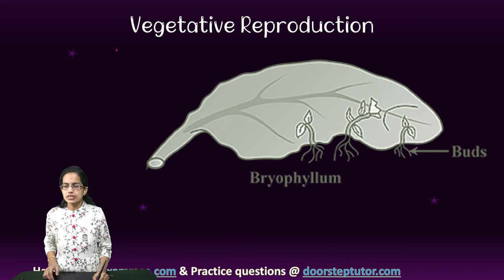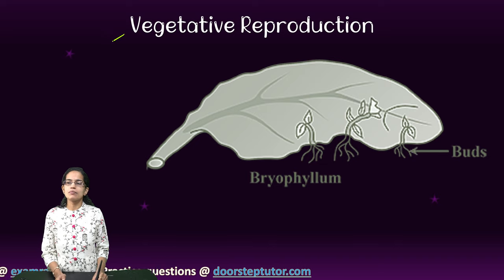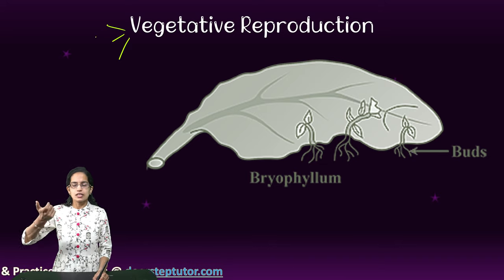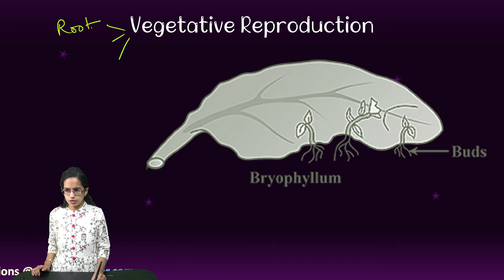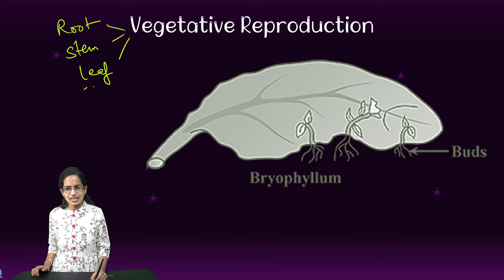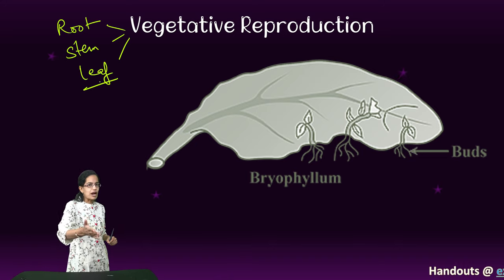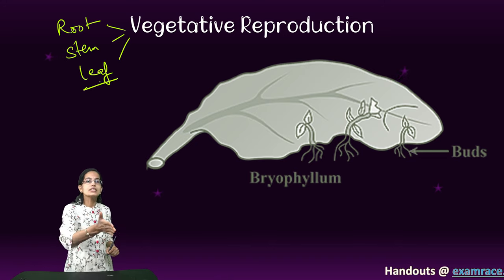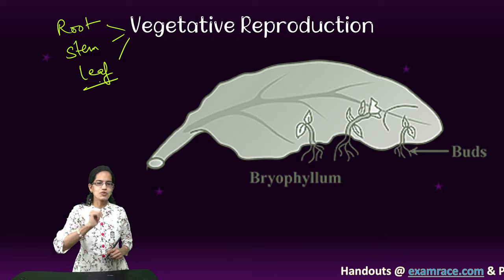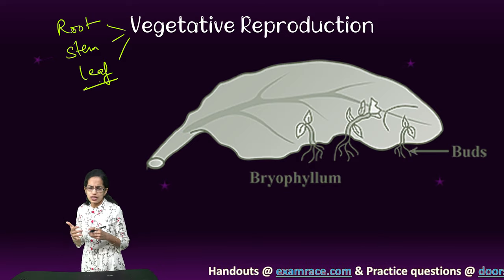In the case of vegetative reproduction, we have three important areas from where reproduction takes place. It can be root, it can be stem, or it can be leaf. In the case of Bryophyllum, this is leaf.